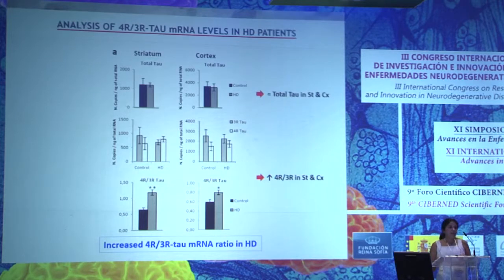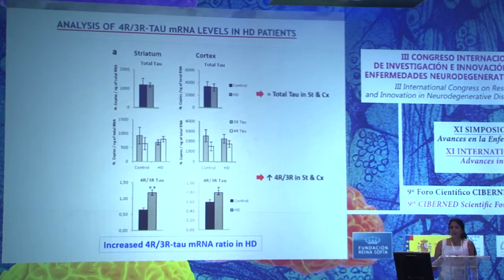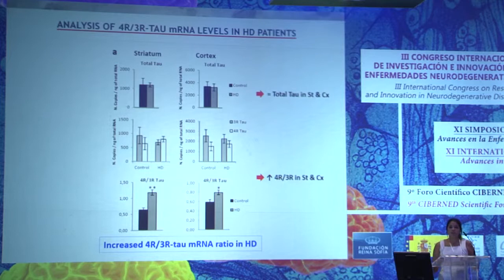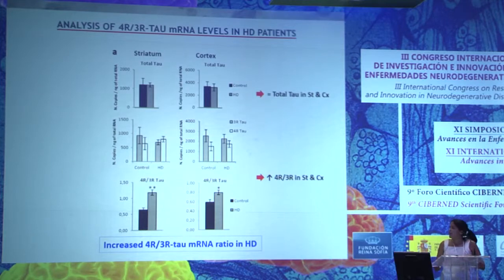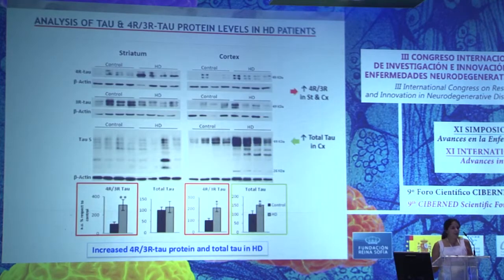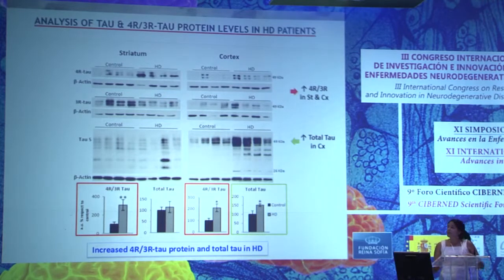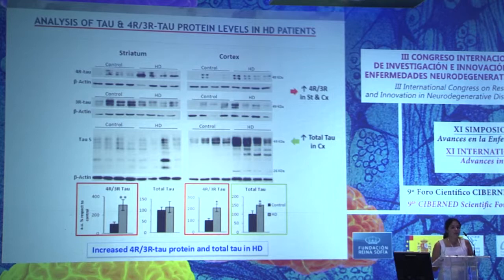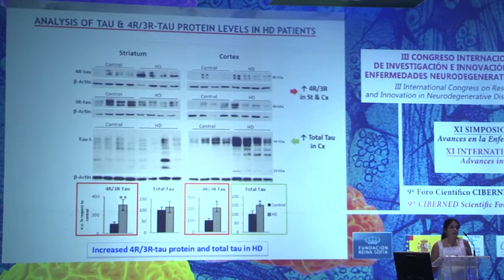At RNA level, in the striatum and cortex of patients, we see no changes in total tau levels, but there is an increase in 4R tau and a decrease in 3R tau — a strong increase in the 4R/3R ratio. At protein level, we also see an increase in 4R tau isoform and a decrease in 3R tau isoform. Additionally, in the cortex of patients, there is an increase in total tau levels, as occurs in other dementias.